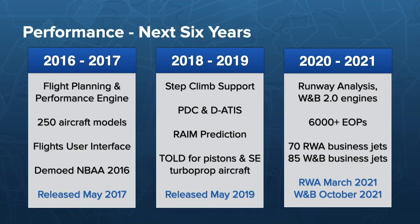Most importantly in the first two years is our Flights user interface — that's what you work in within ForeFlight when you do your planning and performance calculations. We released that roughly four and a half years ago in May of 2017, then expanded upon it, adding step climb support, PDC, digital ATIS, and rain prediction. We also started takeoff and landing calculations for piston and turboprop aircraft, then switched over to runway analysis. In parallel, we completely revamped our weight and balance engine. The runway analysis came out in March of this year and the weight and balance portion came out literally just yesterday for business performance subscribers.